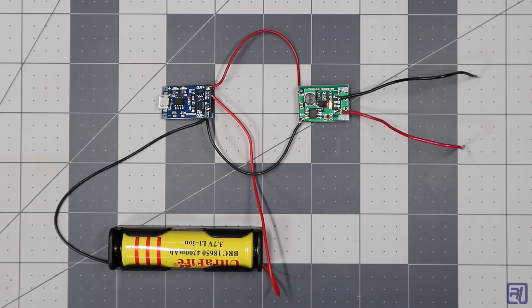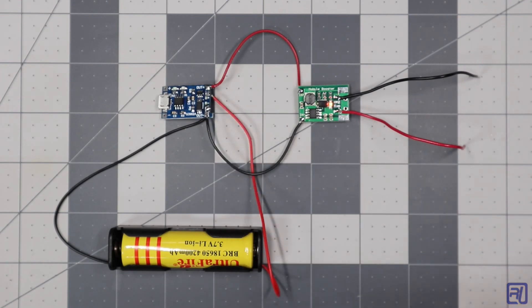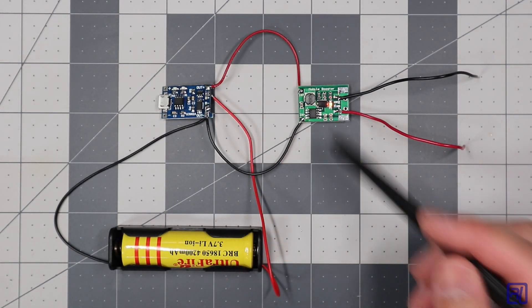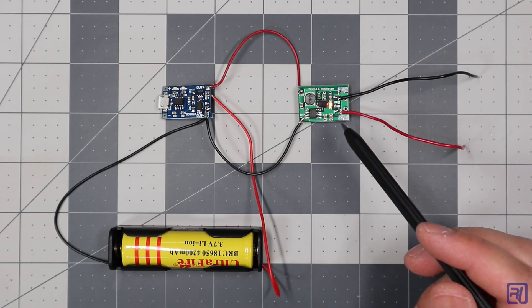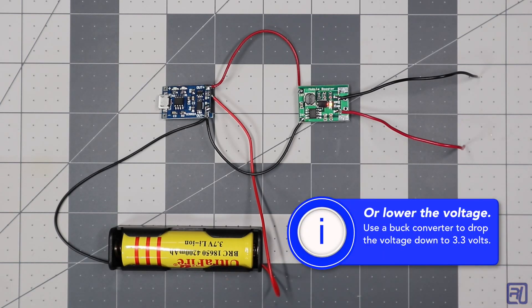Okay so here's an example for how to use the TP4056 charger board. I'm using an 18650 lithium battery. It's connected to the battery plus and negative pads. And I attach the output to this boost converter. So what this boost converter is going to do is it's going to boost up the 3.7 volts of the 18650 to 5 volts. So now I have something that can power an Arduino.